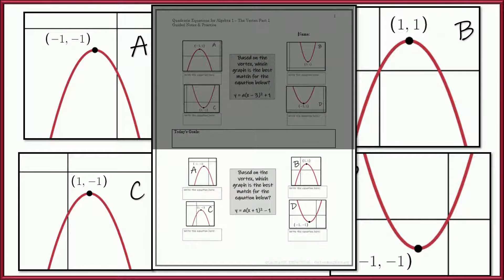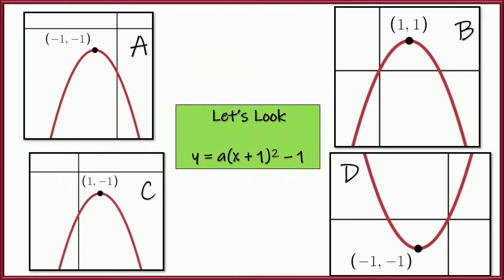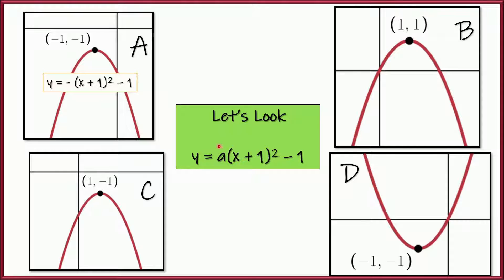This is at the bottom of the page and you've got a place to write all of your equations. Graph A's equation is y equals negative x plus 1 squared minus 1. A equals x plus 1 squared minus 1. The leading coefficient is negative — it's going down, the parabola opens downward. Same with C and B — their leading coefficients are negative. D has a positive leading coefficient and its parabola opens upward.